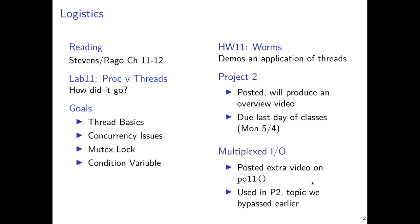A separate video has been posted that demos poll's use, where you have a fast and a slow child separately producing outputs. Poll alleviates the need to guess which is ready and instead provides notification on a series of file descriptors about which are ready. A process can block and then get woken up as soon as any of the input sources it's interested in has data available. Make sure to download and inspect the code, as the techniques associated with poll will be useful in the project's server portion.